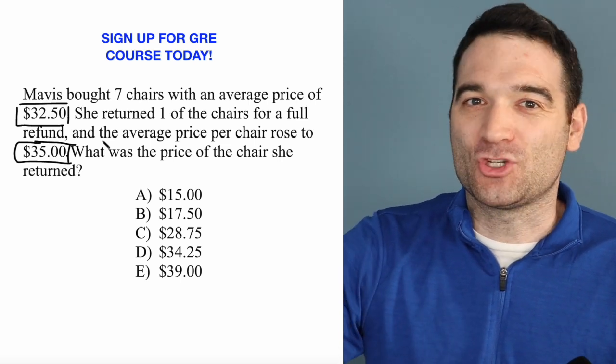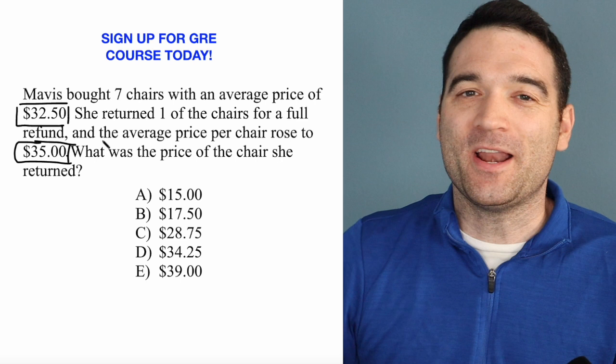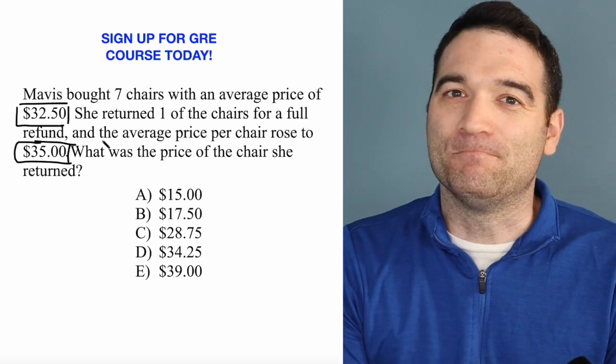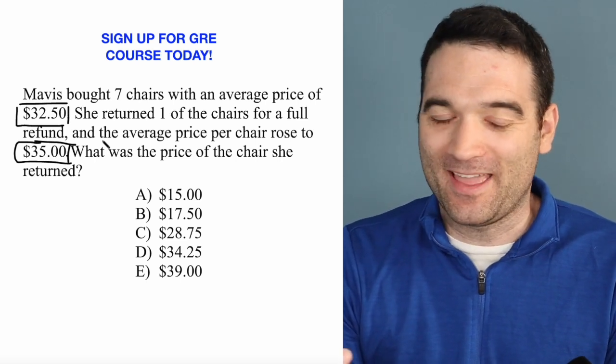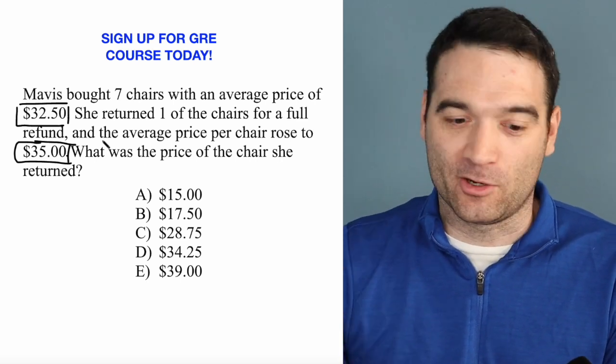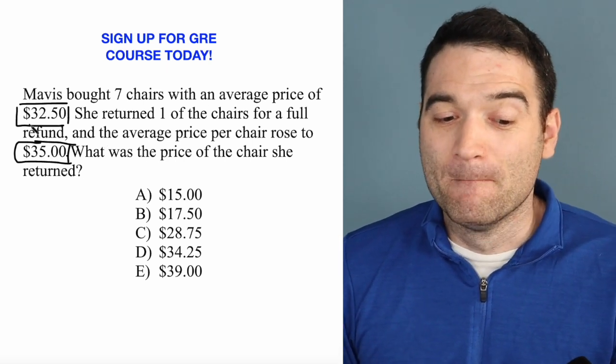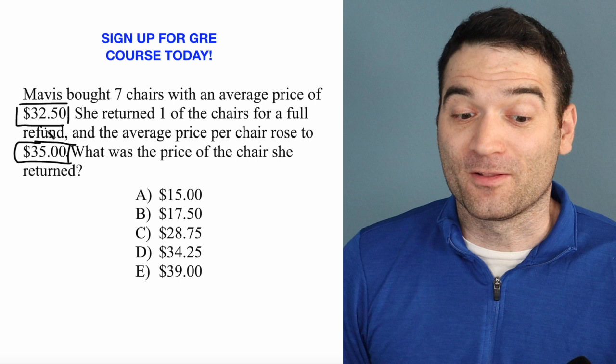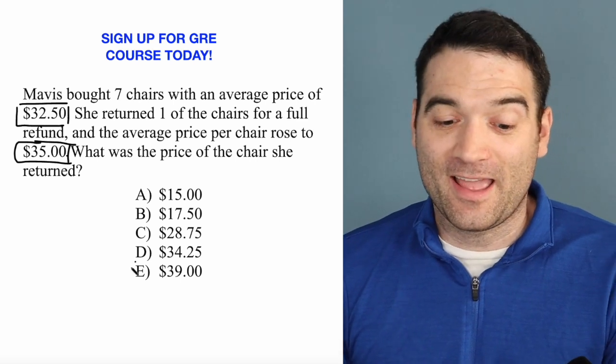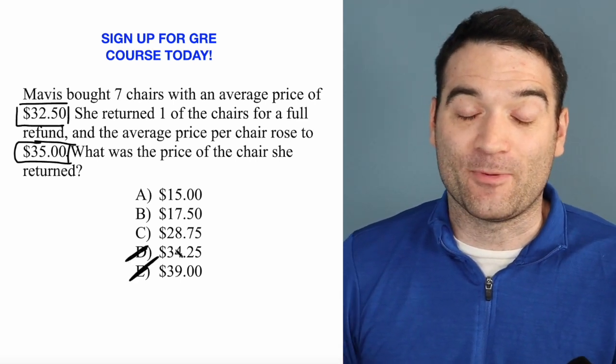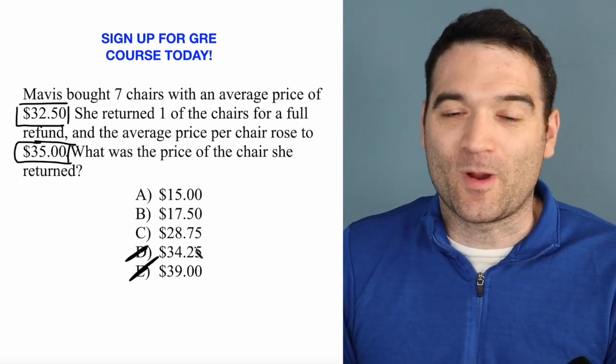If I gave a chair back and the overall average went up, that means that the chair was pulling the average down. And now the average is better or higher because I returned it. So that means that the chair was cheaper than $32.50. And therefore, I can get rid of answer options D and E right away. Nice to be able to do that just right off the bat.